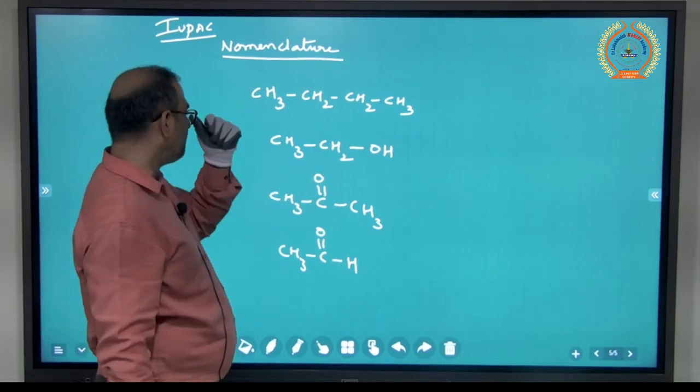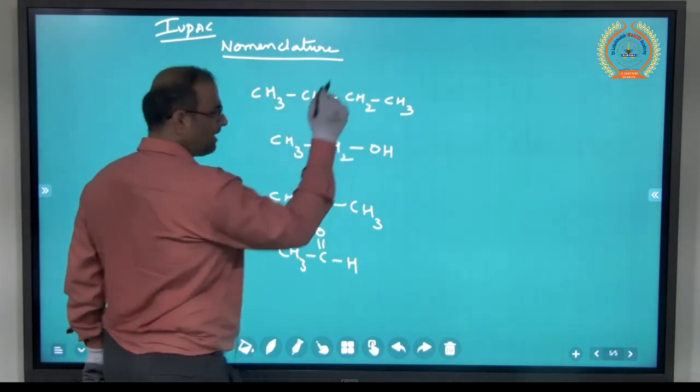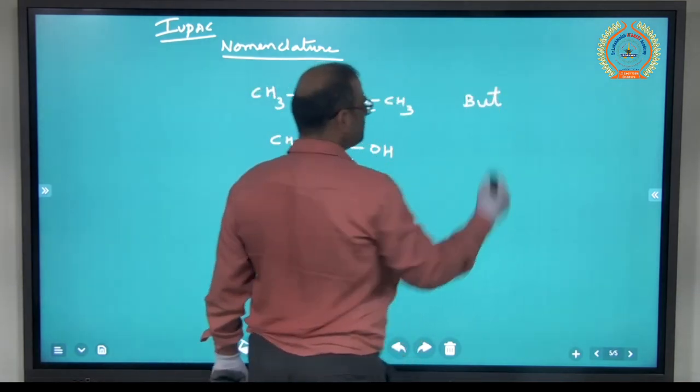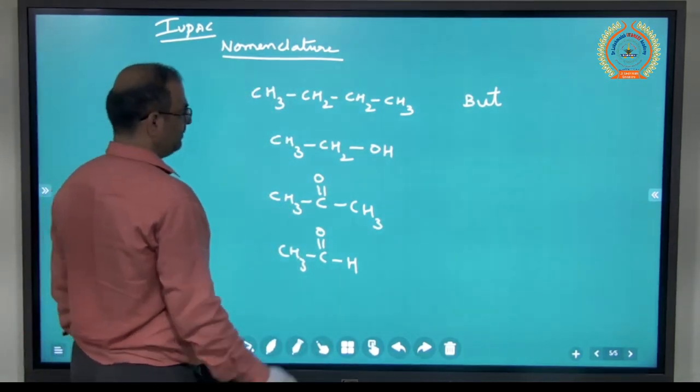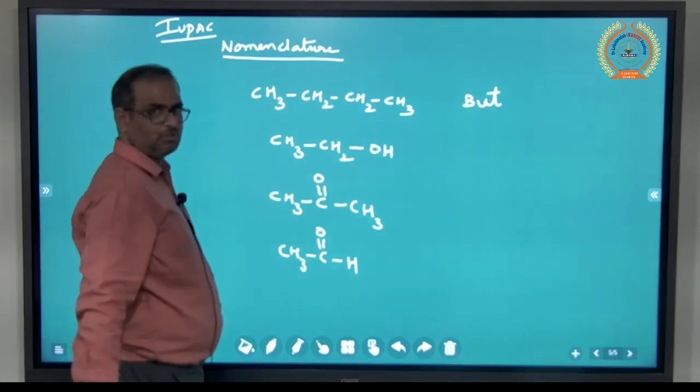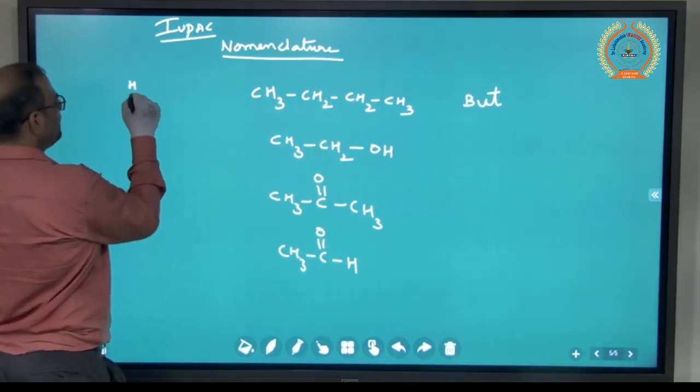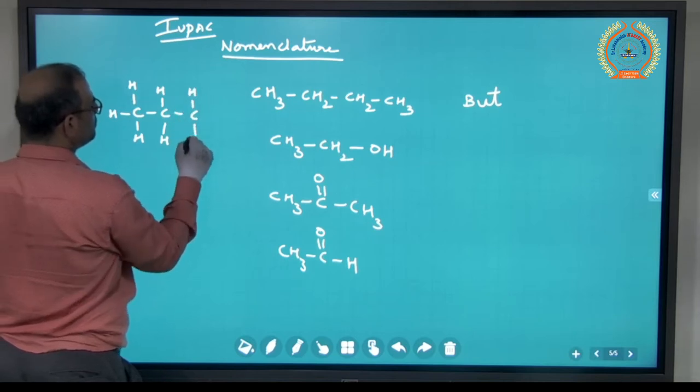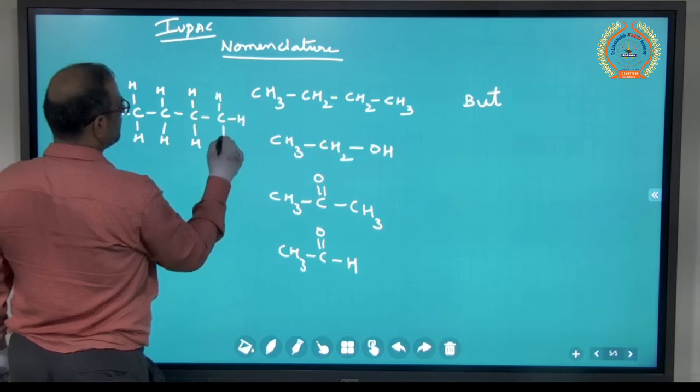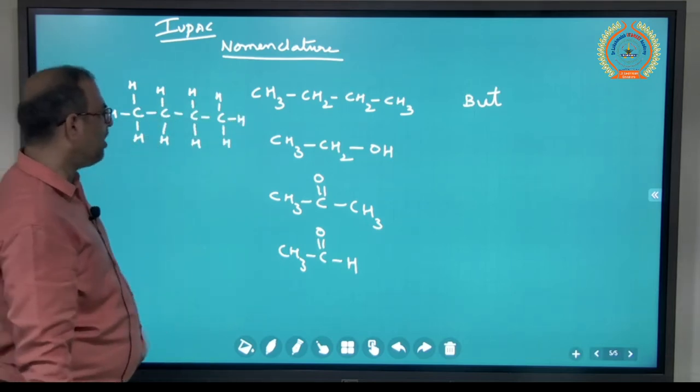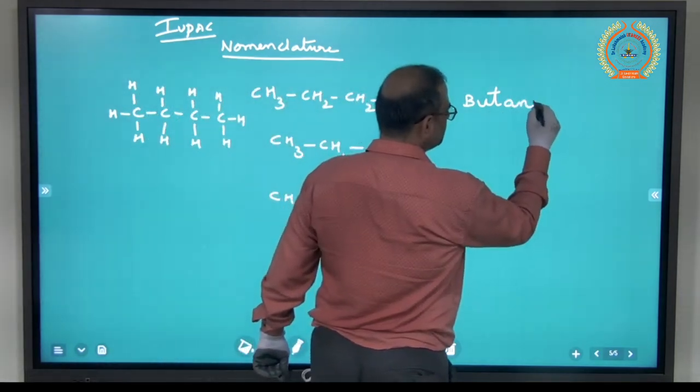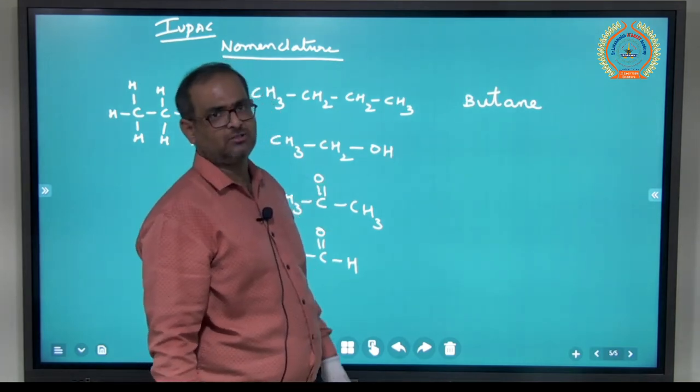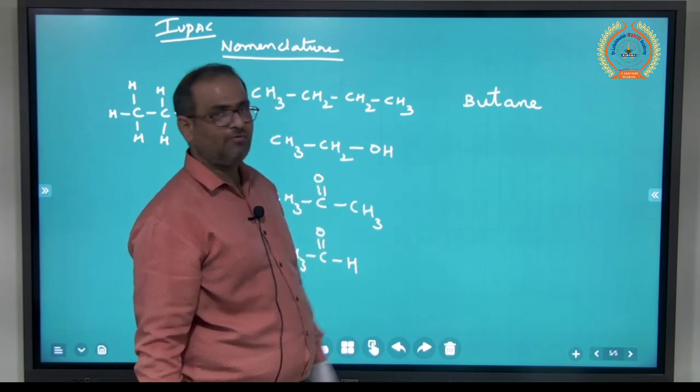There are certain rules. If you see the first compound, 1, 2, 3, 4 carbons. According to IUPAC system, 4 carbons means it is bute. Then if you see the bonding, all of them are single bonds. Whenever single bonds are there, that means it is alkane. So bute plus A, it is butane. So this comes under alkanes.